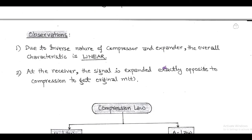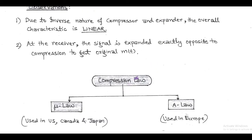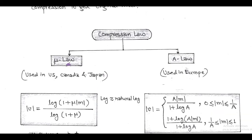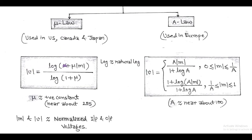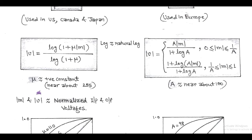Now we discuss compression law. In non-uniform quantization, the compressor is based on the compression law at the transmitter side. These are called Mu law and A law. Mu law is used in US, Canada, and Japan, while A law is used in Europe. According to Mu law: |V| = log(1 + μ|M|) / log(1 + μ), where |M| and |V| are normalized input and output voltages and μ is any positive constant — practically its value is near about 255.